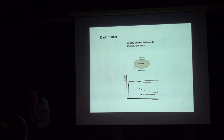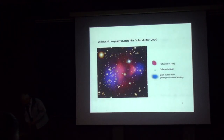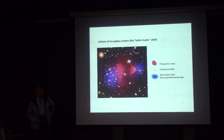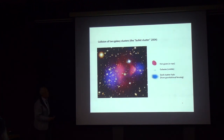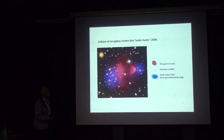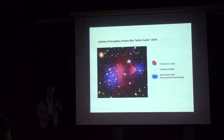Another puzzle. The most convincing evidence for dark matter comes from a recent picture of the collision of two galaxy clusters. The red stuff is visible hot gas, but the blue stuff is invisible — detected only by gravitation. It shows that these two colliding clusters trail behind them clusters of stuff that is not visible but has a gravitational field. That's dark matter.